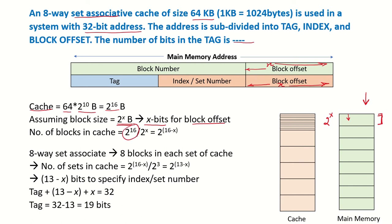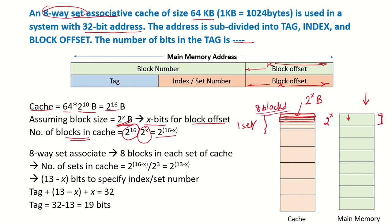There are 2 to the power of 16 bytes in the cache, and the block size is 2 to the power of x bytes, so the total number of blocks in the cache is 2 to the power of 16 minus x. Since this is an 8-way set associative cache, each set contains 8 blocks, each of size 2 to the power of x bytes.